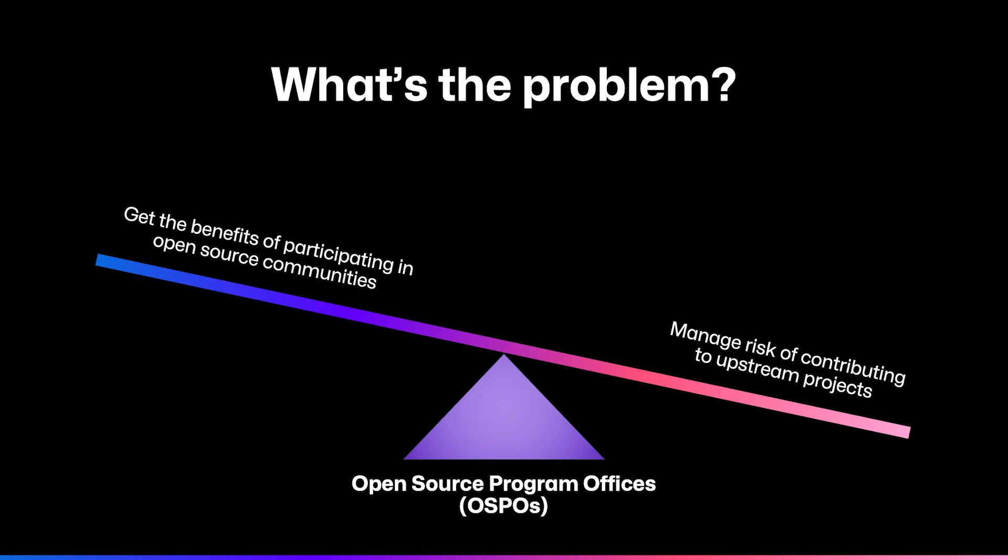Many organisations want to participate in open source communities, but they have to balance the risk of upstream contributions with compliance, legal and security concerns. Open source program offices are teams that help companies contribute to the open source community while balancing and managing that risk.